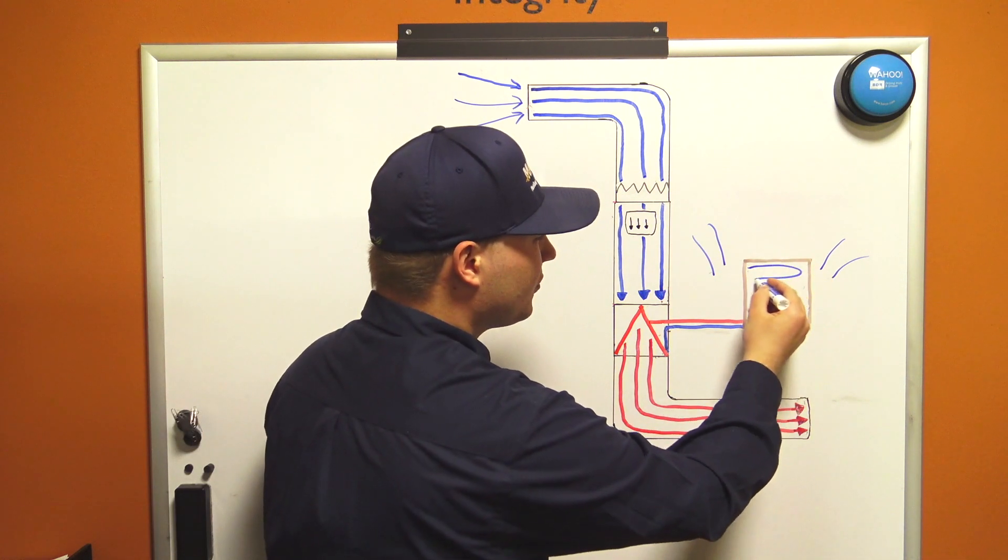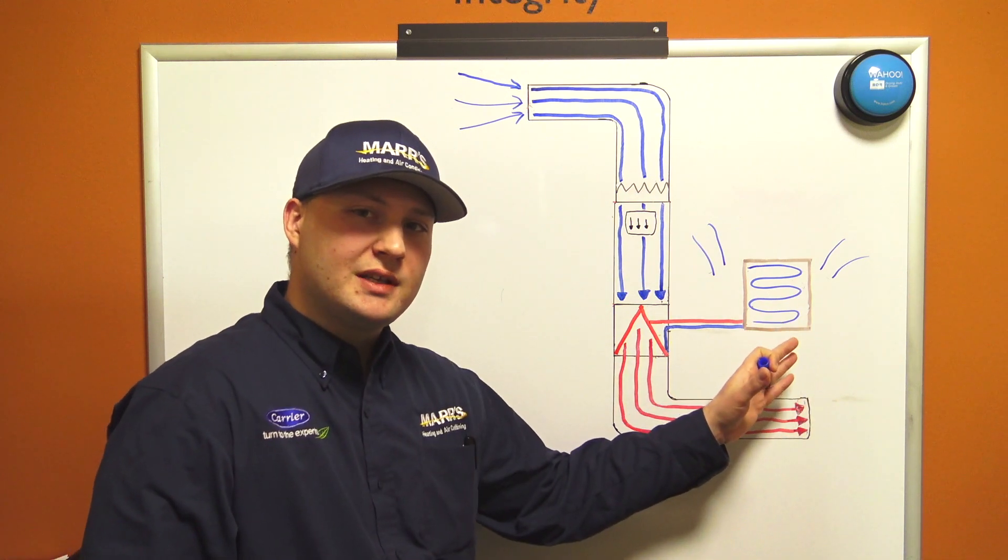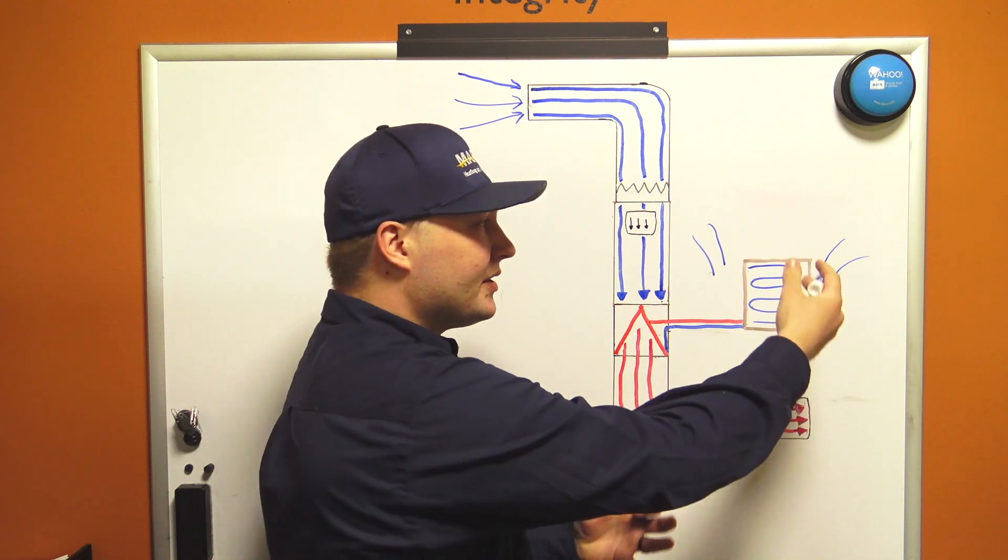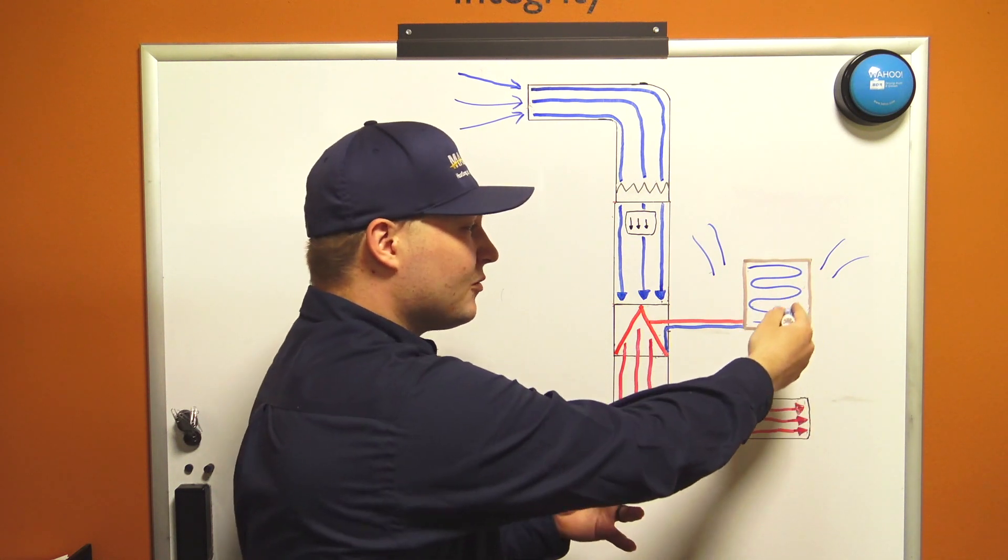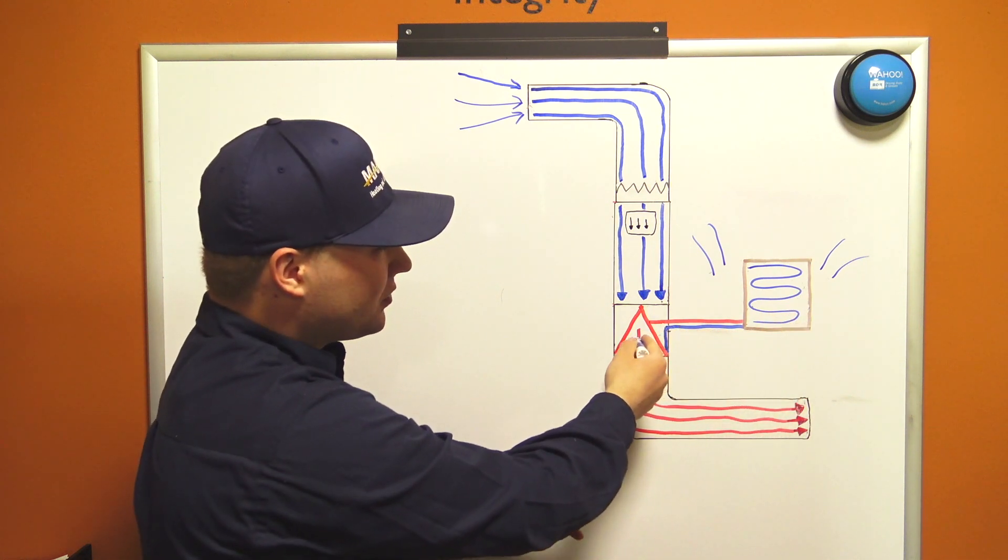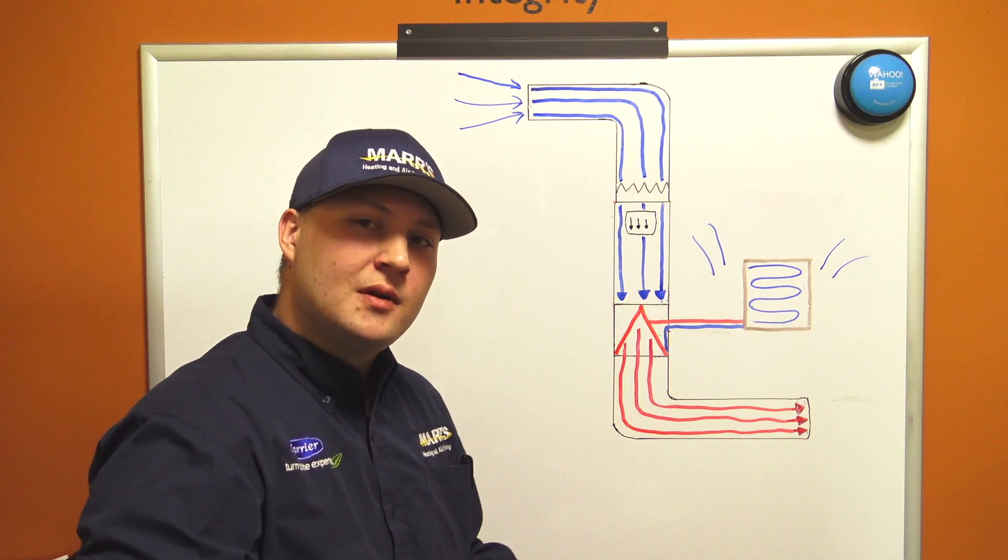We're running cold refrigerant through this outdoor unit and because that refrigerant is so cold, all the latent heat in the air is attracted to that coil. So we're absorbing that heat into that refrigerant and then rushing it through to this indoor unit where we're distributing that through the house.